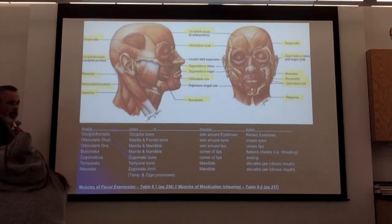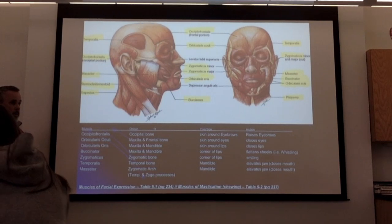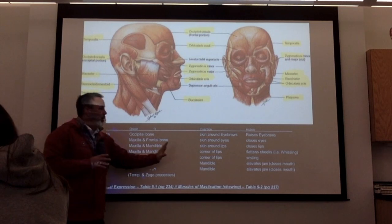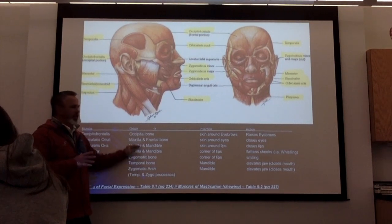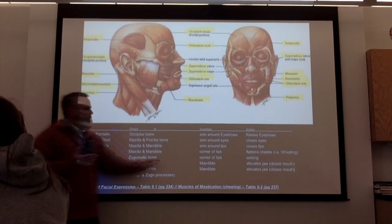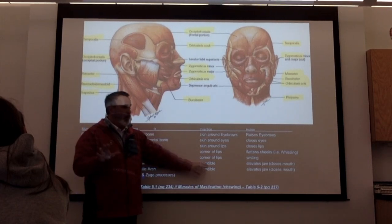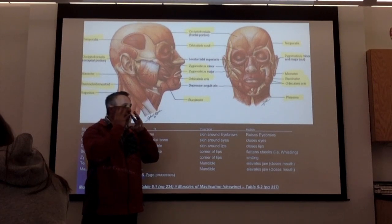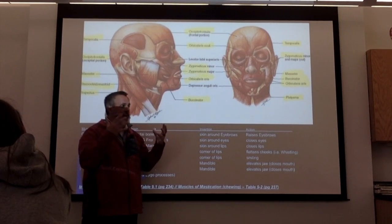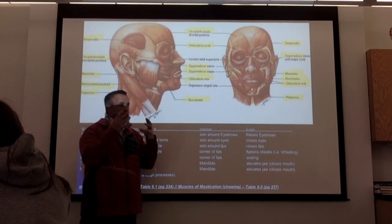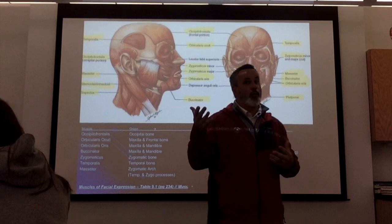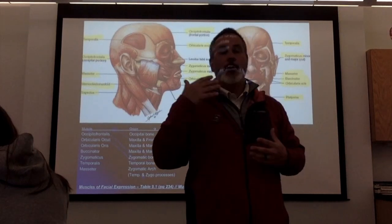The origin is the bone the muscle is associated with, and the insertion is where the muscle pulls from. Both are not always bone — for facial expression muscles, the insertion is actually pulling on skin, not bone. That's why you get all these different facial expressions. A lot of times you can read people by their facial expressions, and the older you get, the better you get at it.